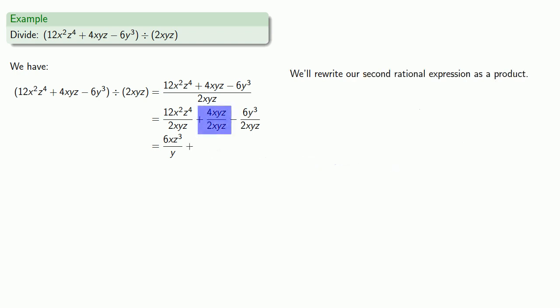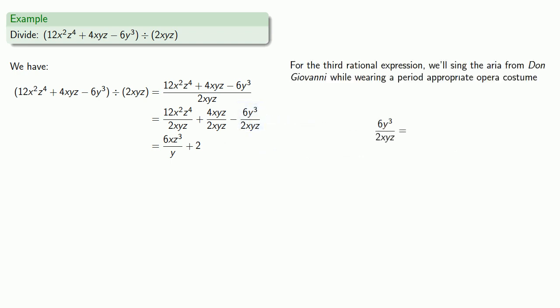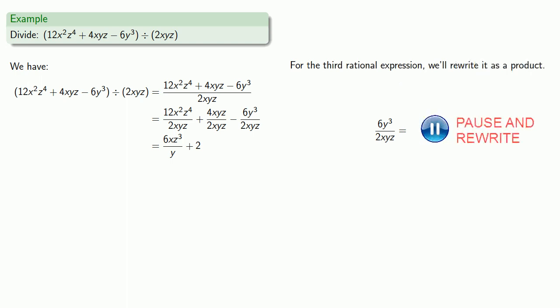We'll rewrite our second rational expression as a product. We'll simplify the fraction for 4 over 2. x over x, y over y, and z over z are all equal to 1, so this reduces to 2. For the third rational expression, we'll rewrite it as a product, then simplify, and combine them back into a single rational expression.